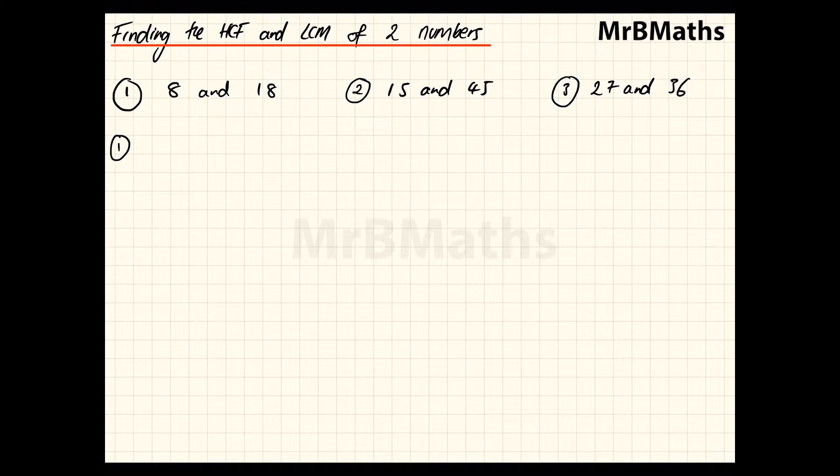Alright so starting off with number 1, I am going to write 8 here and 18. The first thing we need to do is the factor tree, so I am going to go with 2 and 4, 2 and 2. So that is that done, you have 8, 2 times 2 times 2. Now you don't have to simplify but just do so out of habit, so 2 to the 3rd and then we are done because there are 3 lots of 2's there.